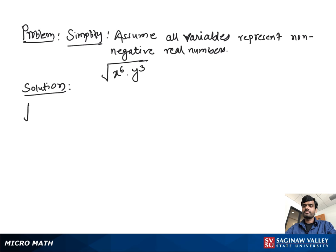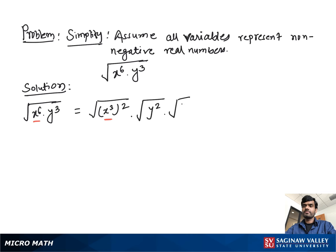To simplify the square root of x to the 6 times y cubed, we first write x to the 6 as the square root of x cubed, all squared, and y cubed as the square root of y squared times the square root of y.